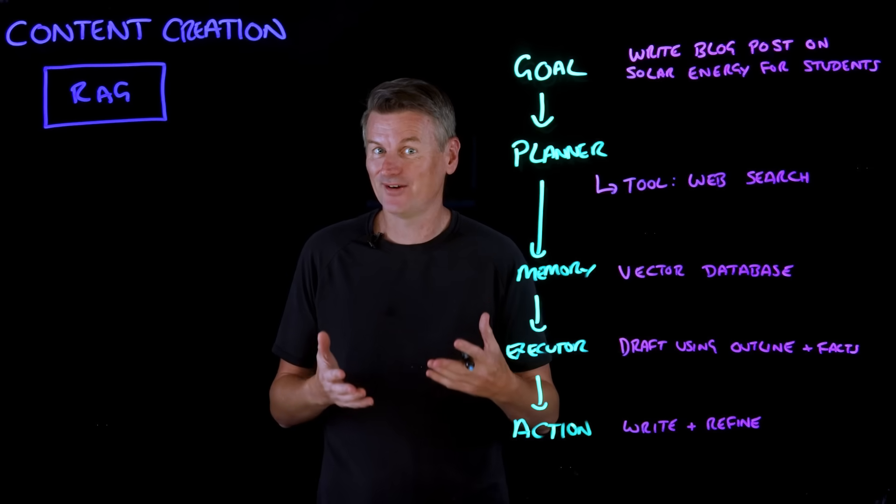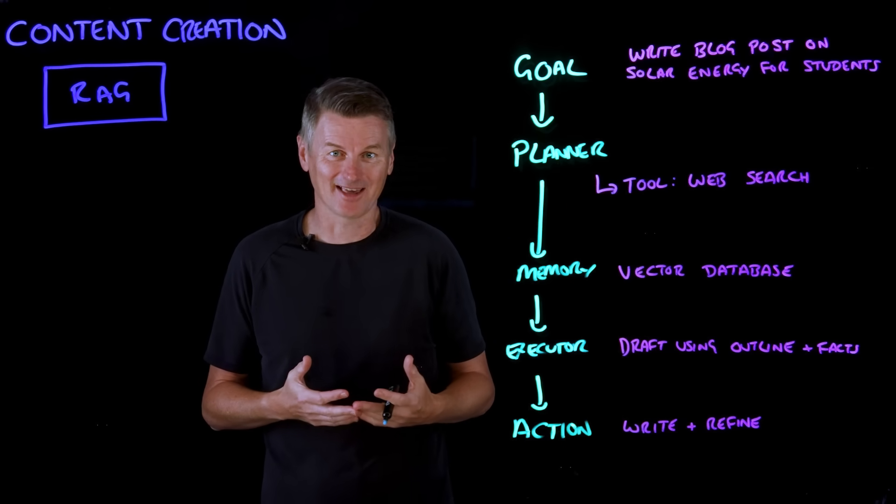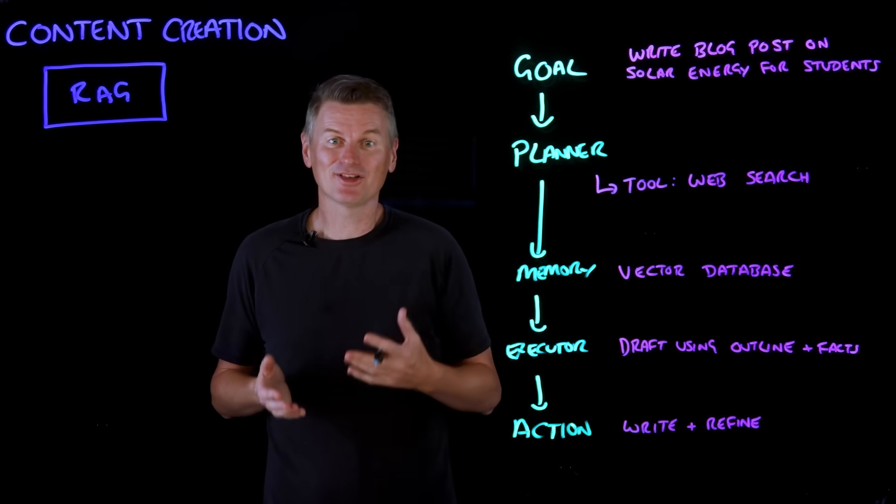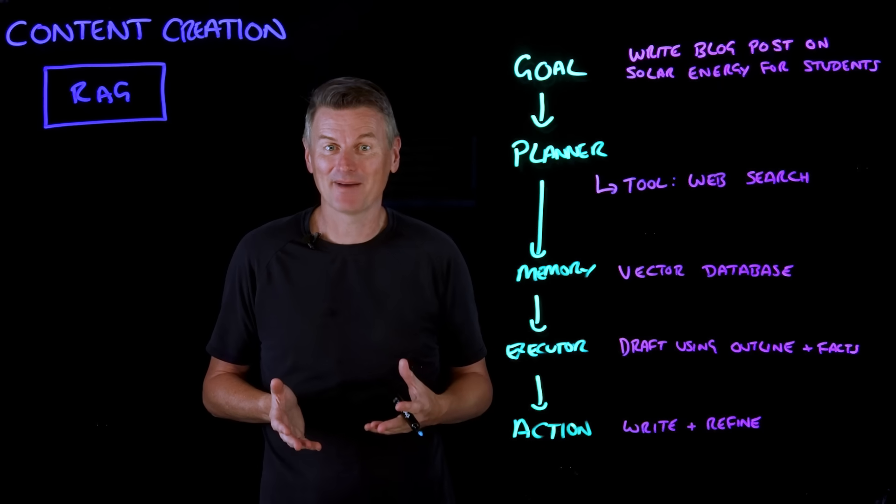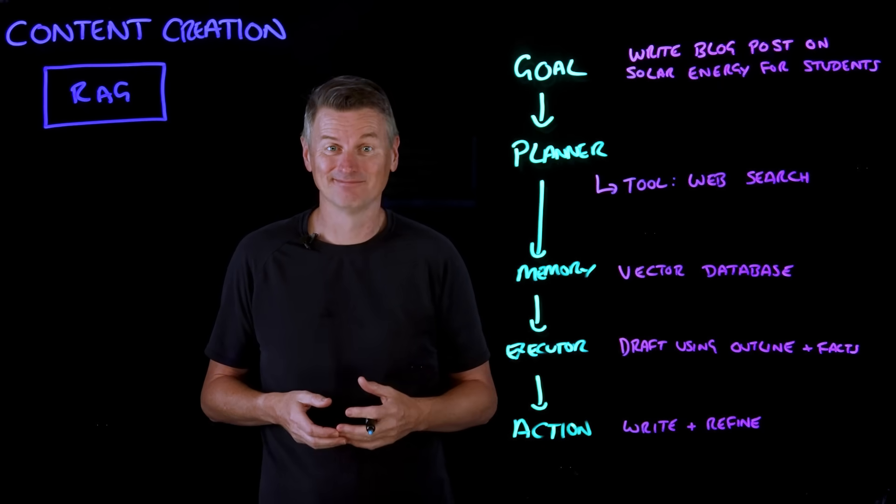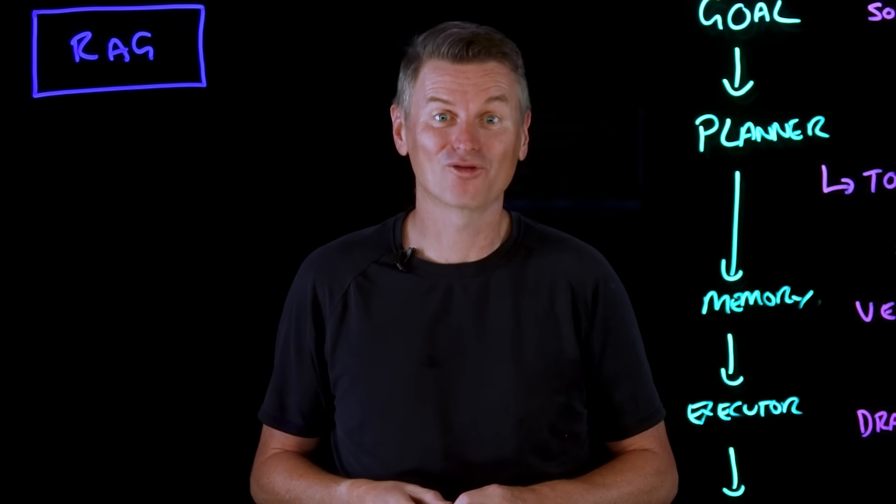So it might generate a first draft and then critique its own writing by asking questions like, is this section well supported by the data? Or does the tone match the brief, which is for students? If it finds gaps, it goes back to search for more specific information or it adjusts the writing style. So that's agentic content creation, incorporating RAG.